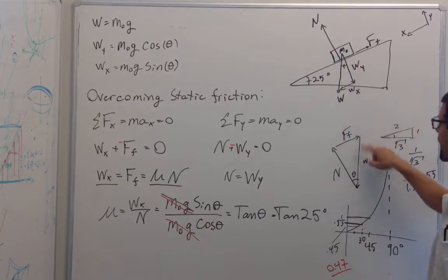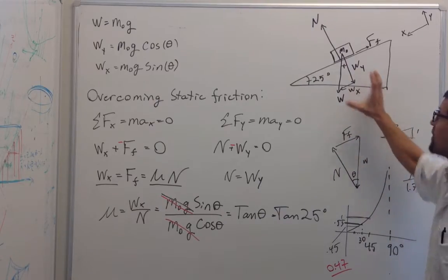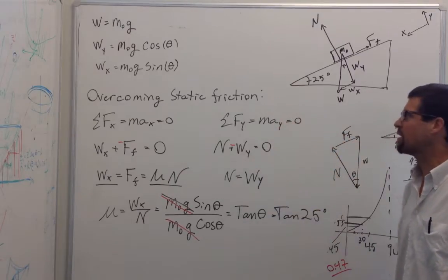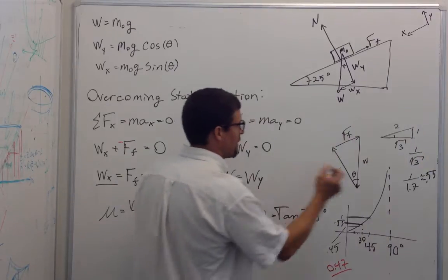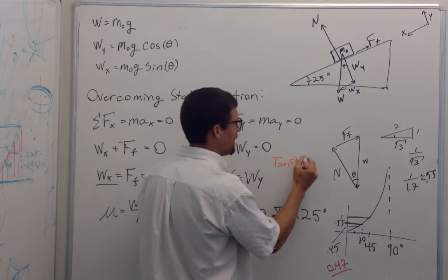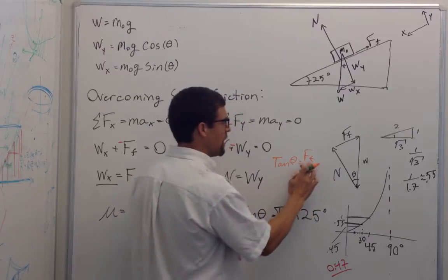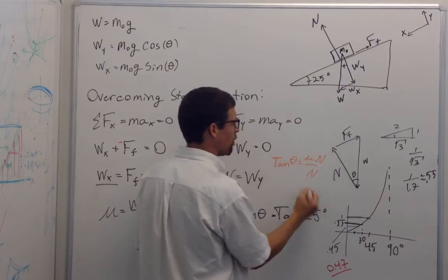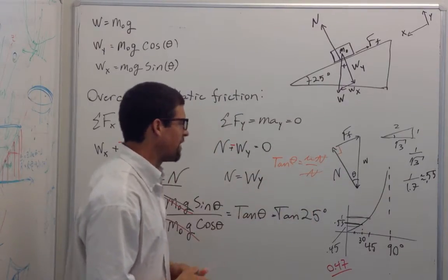We can add these vectorally to show that the sum of the forces equals zero if it's not accelerating, and that's a situation where we just break the static friction. We could right away solve this by just writing the tangent of theta is equal to the force of friction divided by the normal force, because the force of friction is equal to mu times the normal force, and we'd be done. What is the tangent of theta of 25 degrees?